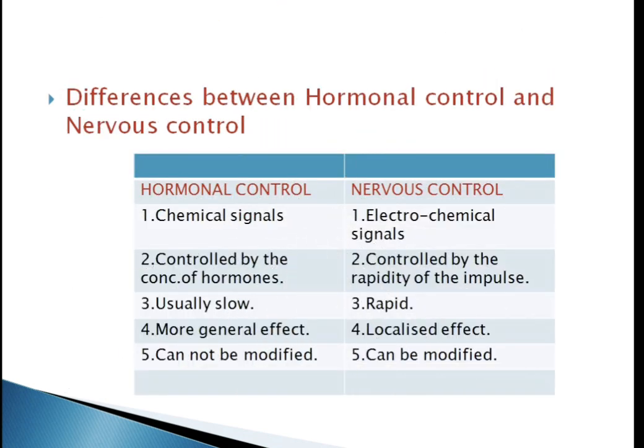Let's see the differences between hormonal control and nervous control. Regarding the nature of signal: all hormones are chemical signals known as regulators, whereas nerve impulses are electrical signals and the transfer of information across synapses is chemical.